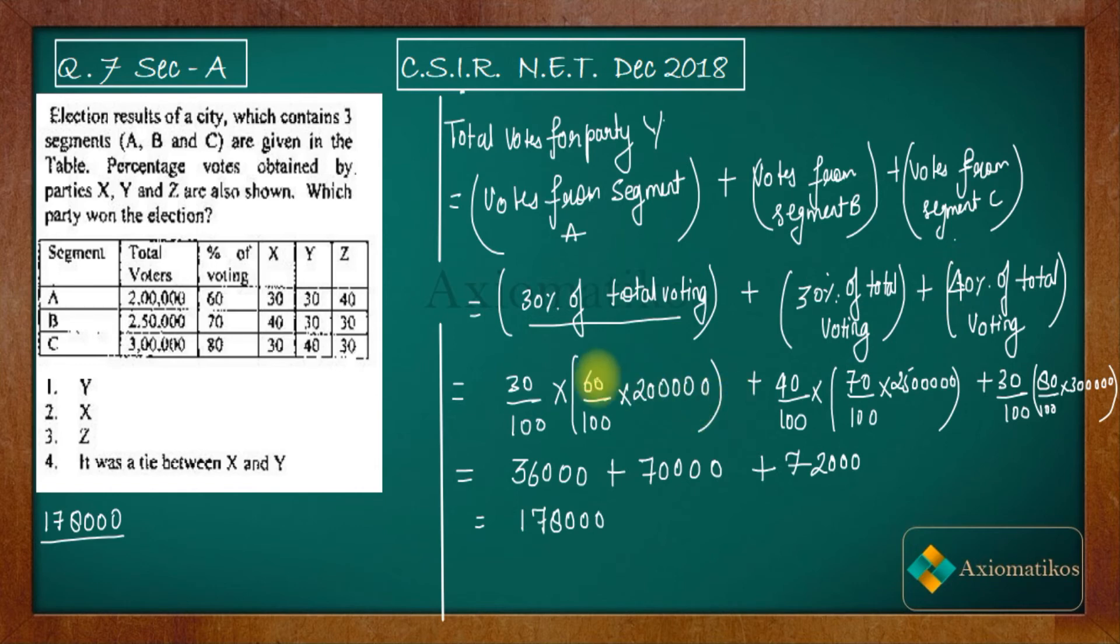The same thing will work. Now let us calculate all of this. Now see that you are getting 1 lakh 84,500 for party Y. This is for X, this is for Y.